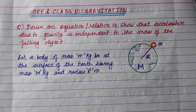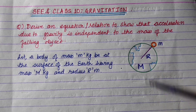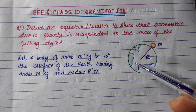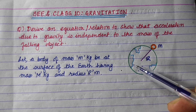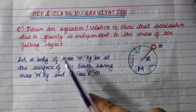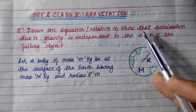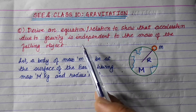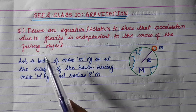Hi everyone. Today I am going to ask for this class 10 a question for the gravity chapter. Derive an equation or relation to show that acceleration due to gravity is independent of the mass of the falling object.